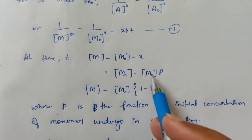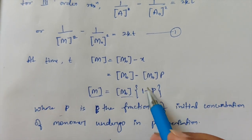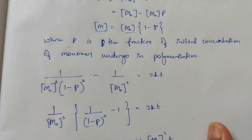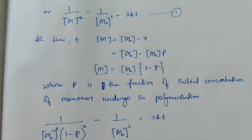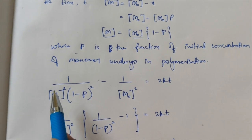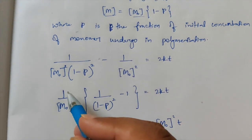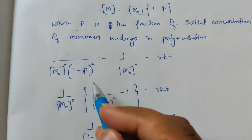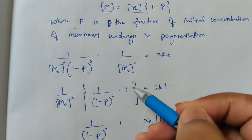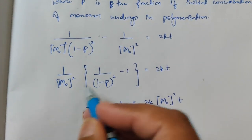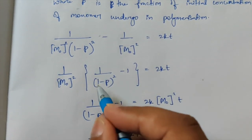Substituting M equals M₀(1-P) into the integrated rate law: 1/[M₀²(1-P)²] minus 1/M₀² equals 2kT. Taking 1/M₀² as common: (1/(1-P)² minus 1) equals 2kT. Multiplying M₀² to the other side: 1/(1-P)² minus 1 equals 2kM₀²T. Moving the minus one to the right side: 1/(1-P)² equals 2kM₀²T plus 1.